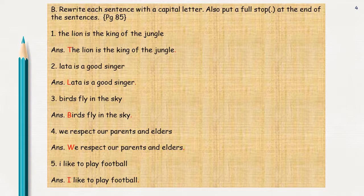Third: birds fly in the sky. B should be capital. So in the answer, you will be writing B capital — Birds fly in the sky — and after sky, put a full stop. Next is: we respect our parents and elders. In the answer, you have to write W capital and put a full stop at the end of the sentence. Next: I like to play football. The I should be capital. Like to play football in small letters, and at the end of the sentence, put a full stop.